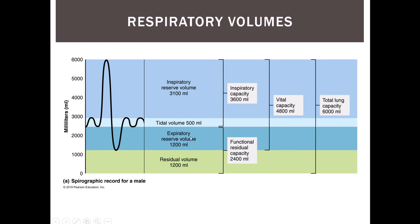If any one of these volumes is off — too big or too small — it usually indicates that there's some problem. Maybe you're a smoker. Maybe you're super athletic — that's not a problem per se, but it's something outside the ordinary. All of those different things will affect these different lung volumes.